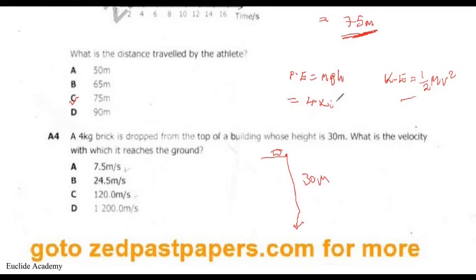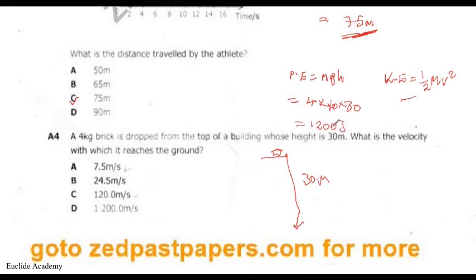PE = mass × g × height = 4 × 10 × 30 = 1200 joules. By the law of conservation of energy, this entire potential energy is converted to kinetic energy just before the brick hits the ground.